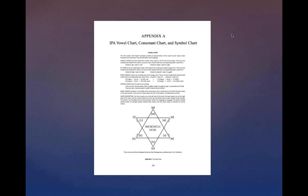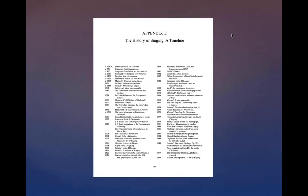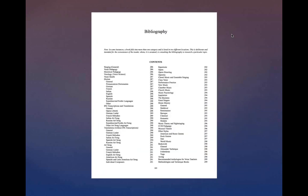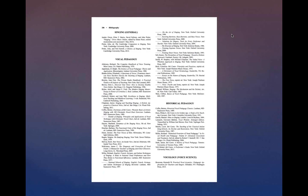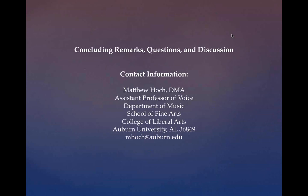Examples of the appendices are shown, including the extensive bibliography, which has its own table of contents. The bibliography is very extensive because the dictionary only scratches the surface of any topic, directing readers there if they want to explore any topic in a more in-depth way.